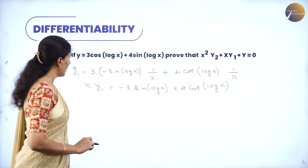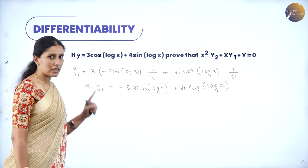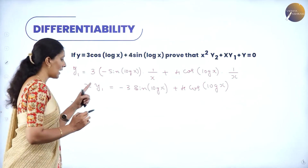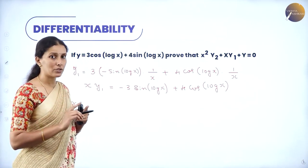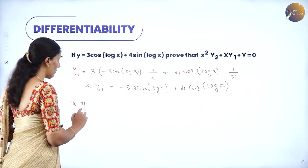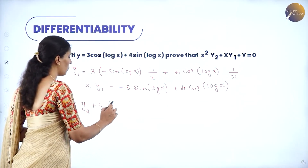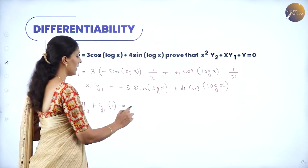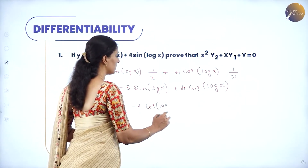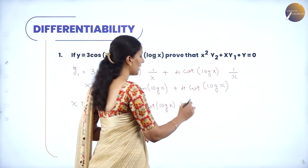Now let us differentiate again. On the left hand side we have two functions — x and y1 — so we use the product rule. First function is x, second function is y1. When you differentiate y1 you get y2. So we get x·y2 plus y1·1 (derivative of x is 1) on the left side. On the right: −3, derivative of sin(log x) is cos(log x)·(1/x). Then 4, derivative of cos(log x) is −sin(log x)·(1/x).